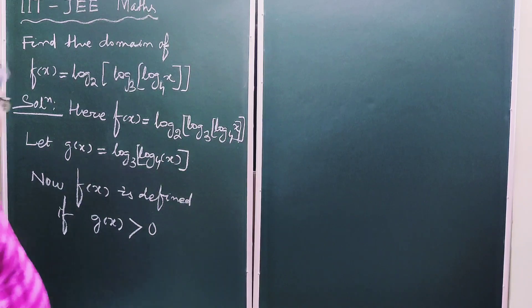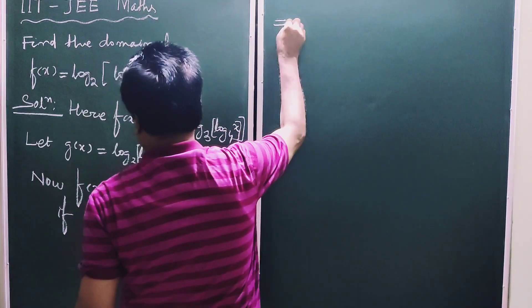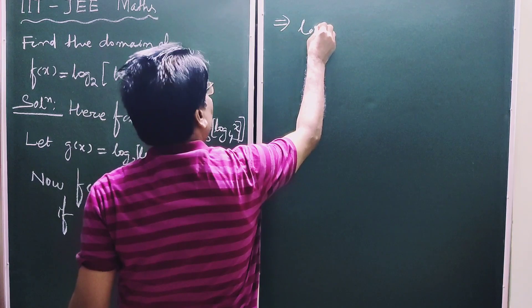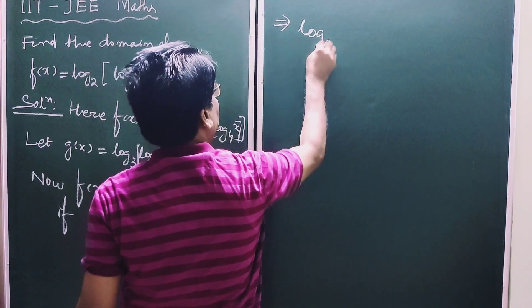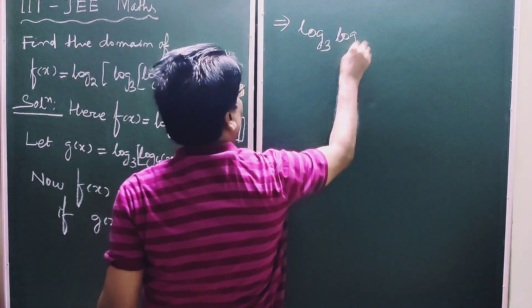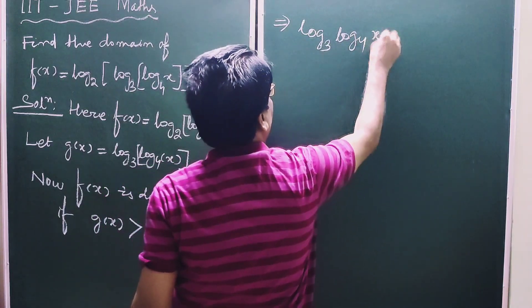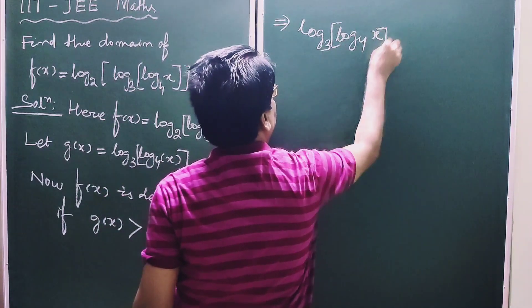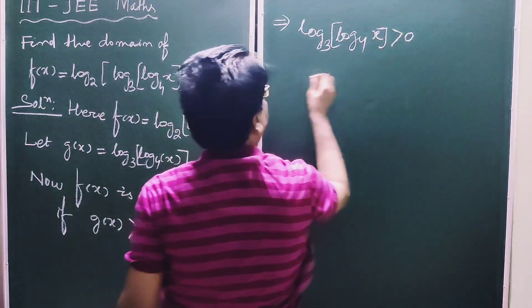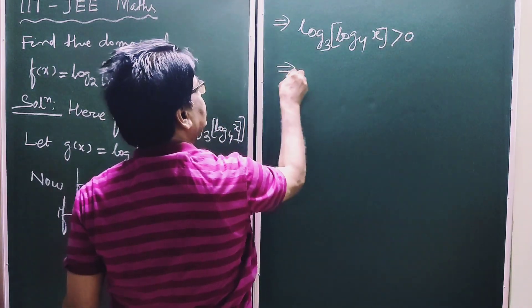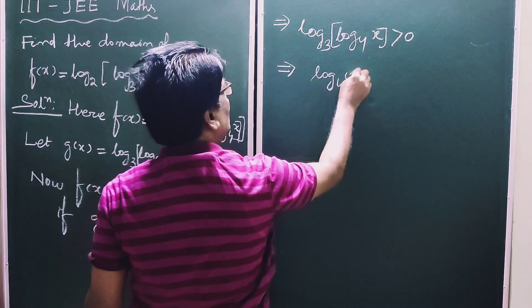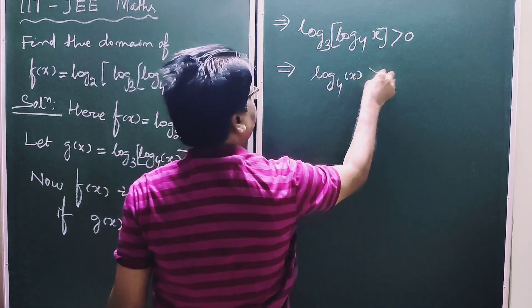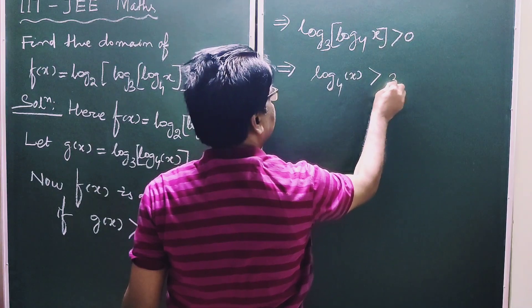This implies log₃(log₄(x)) greater than 0. This implies log₄(x) greater than 3 to the power 0.